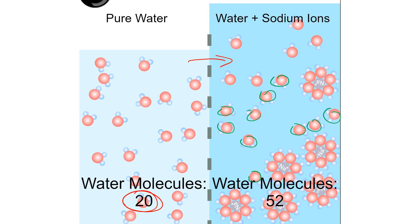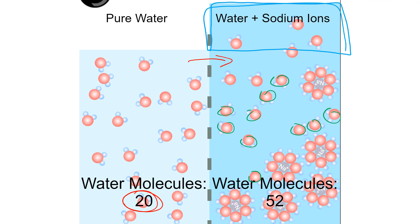The water level on the right has actually increased because more water moved from left to right through osmosis, causing that layer of water to push up higher on that side of the container. That's exactly what osmosis can do — it can make containers or cells increase and decrease in size.